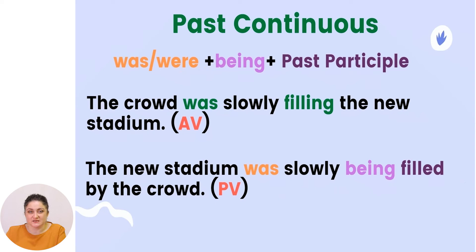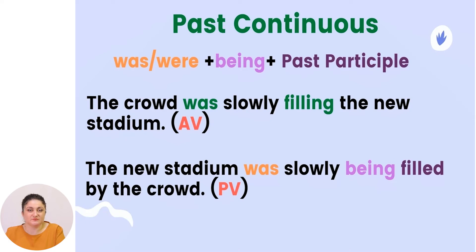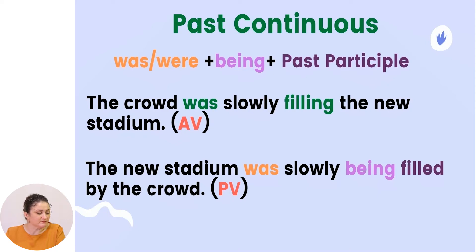Past continuous. To transform past continuous into a passive voice sentence, you need to use the past simple forms of the verb 'to be' — 'was', 'were' — plus 'being', plus the past participle. Example: 'The crowd was slowly filling the new stadium.' becomes 'The new stadium was slowly being filled by the crowd.'